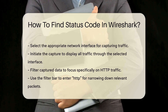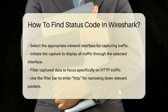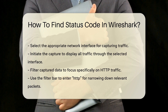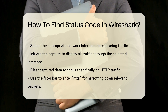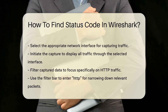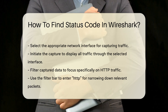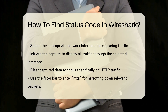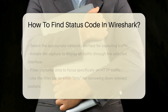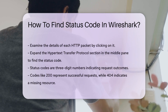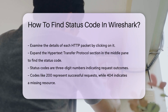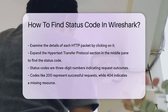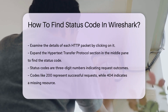Once the HTTP packets are visible, examine the details of each packet. Click on an HTTP packet to view its contents. In the middle pane, expand the Hypertext Transfer Protocol section. Here, you will find the status code listed prominently.